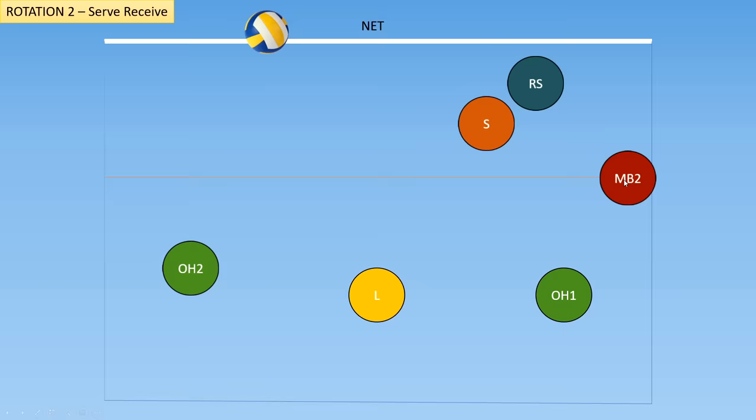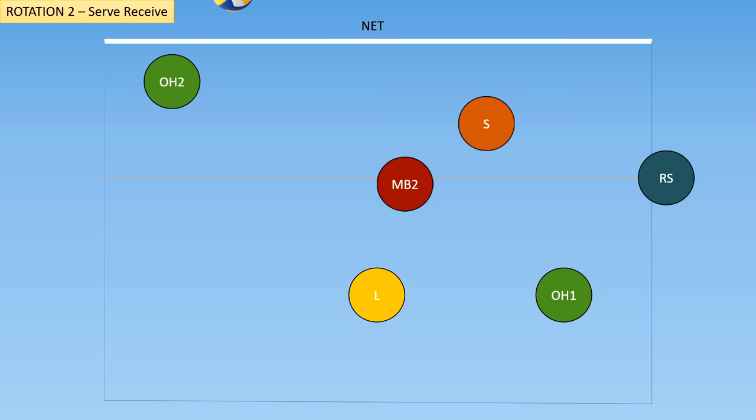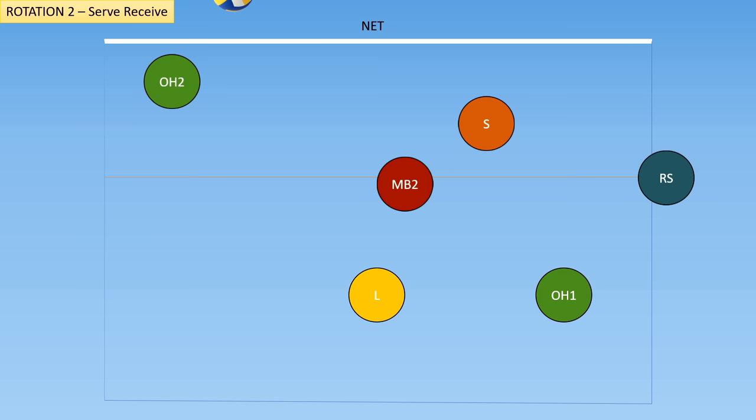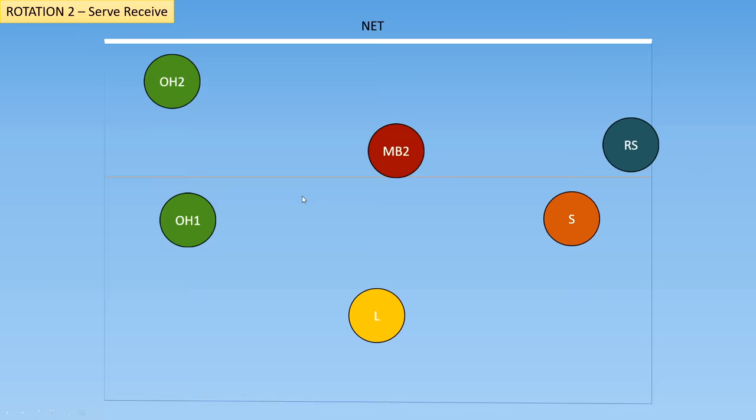Now the ball comes over, the middle blocker is going to run over to the middle to get ready to hit, and the right side and outside are going to get ready to hit. The setter can set anybody they like. Now that the ball has crossed to the other side of the net, we get into base positions — switch. The setter needs to get to the back right, the outside hitter gets to the back left, and the two other players get up to the net ready to block. And now we are back in base positions.